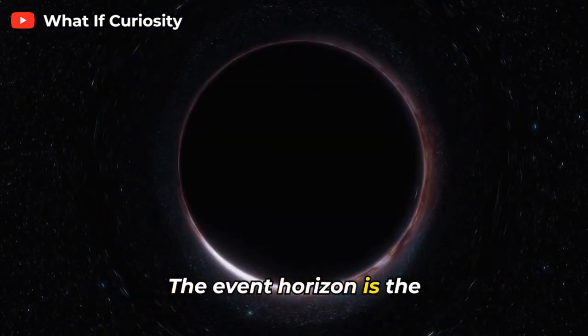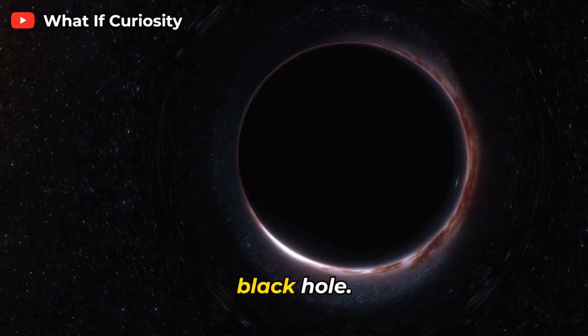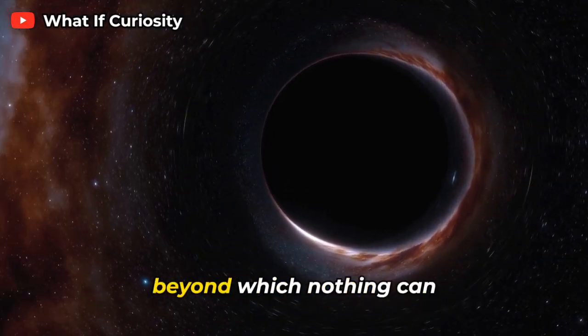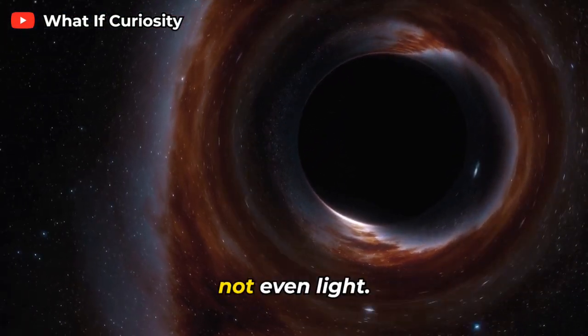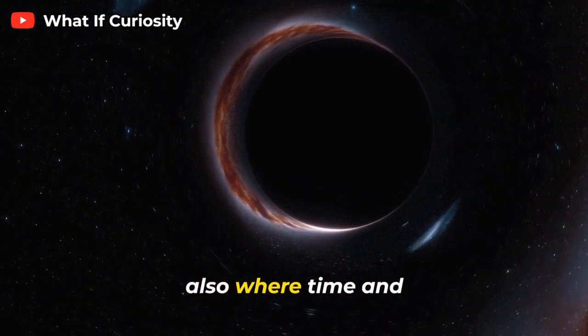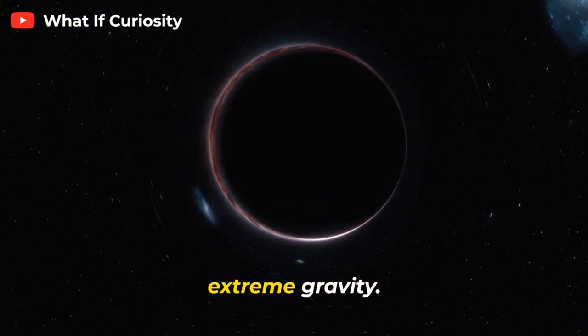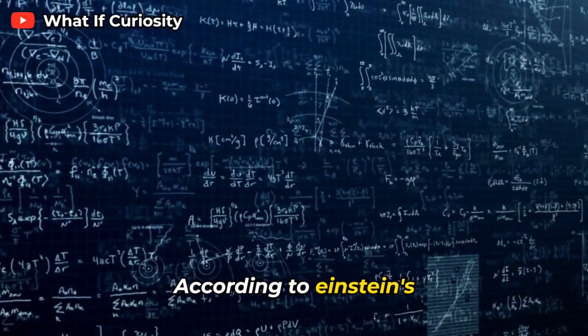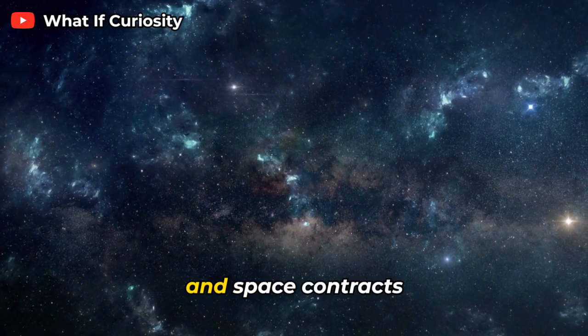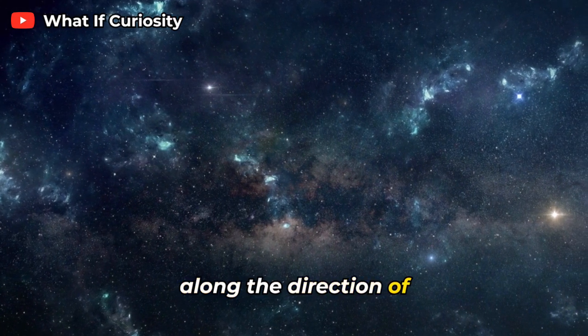The event horizon is the point of no return for a black hole. It is the boundary beyond which nothing can escape, not even light. The event horizon is also where time and space get warped by the extreme gravity. According to Einstein's theory of relativity, time slows down near a massive object, and space contracts along the direction of motion.